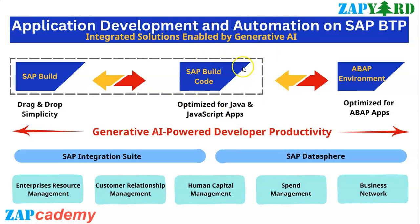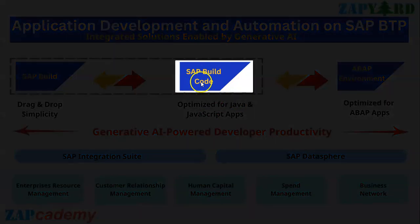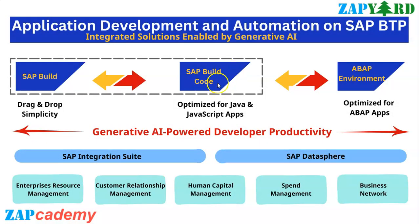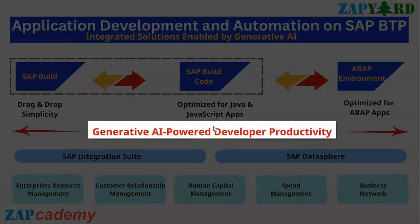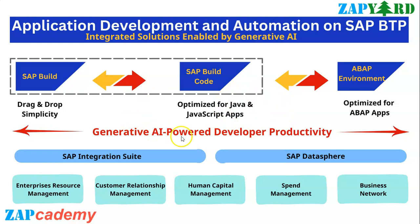SAP Build Code boosts developer productivity using an integrated development environment and various tools and frameworks optimized for building Java or JavaScript apps. SAP Build Code focuses more on professional developers, and the best part is the inclusion of generative AI capabilities across all the different steps that a pro-code developer needs to follow.